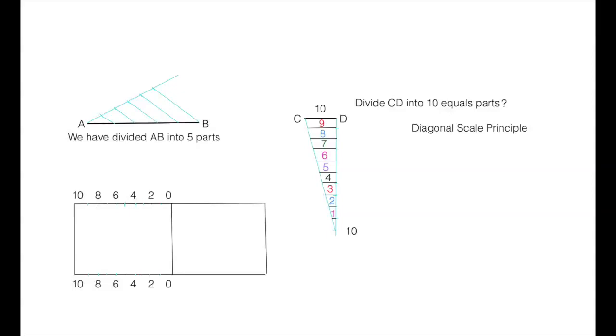So I'm writing 0, 2, 4, 6, 8, 10. And I'll be writing on both the sides, up as well as down. Now in this you join 0 to 1.